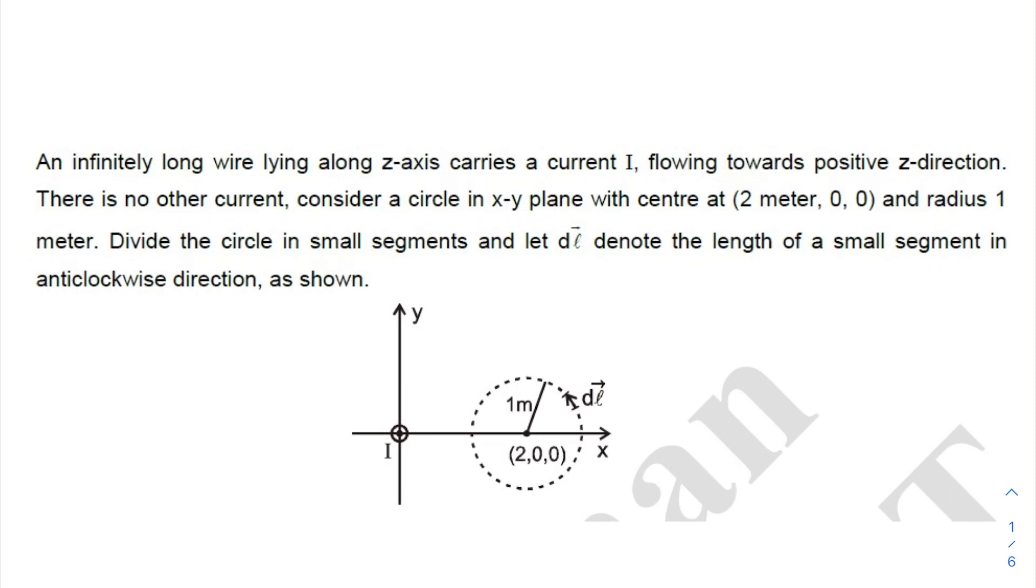Consider a circle in the x-y plane with center at (2, 0, 0) and radius 1 meter. Divide the circle into small segments and let dl denote the length of a small segment in the anti-clockwise direction as shown.